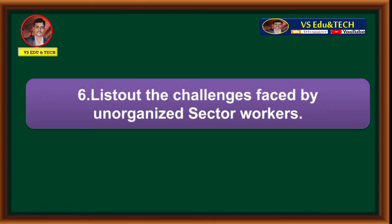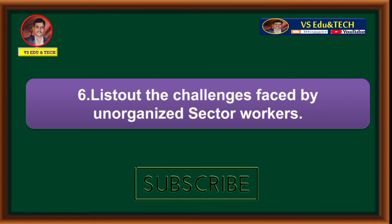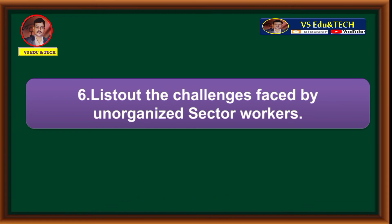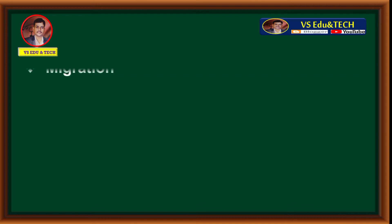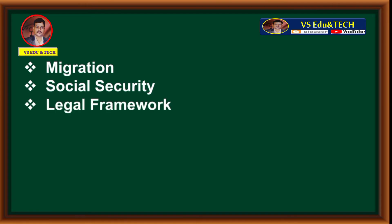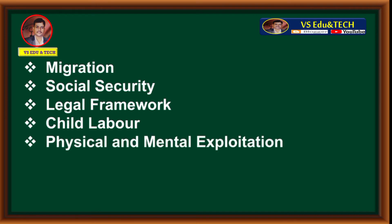Question six: List out the challenges faced by unorganized sector workers. The challenges faced by unorganized sector workers are: migration, social security, legal framework, child labor, and physical and mental exploitation.